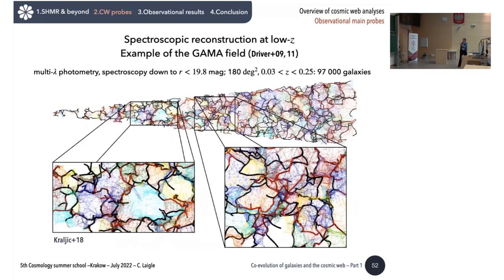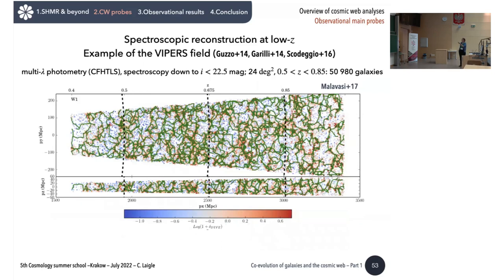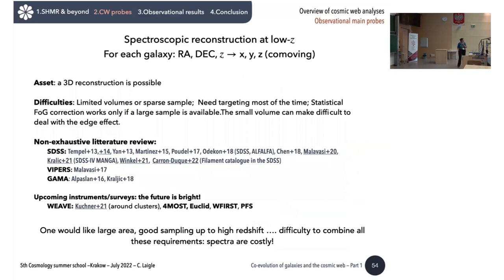Another example in the VIPERS field shows cosmic web reconstruction up to redshift 0.85, with filaments identified by the structure-finder code shown as green lines. A brief recap: with spectroscopic redshifts, we can make 3D reconstructions provided we correct for the finger-of-God effect, which is not easy especially with low statistics. But spectra are costly, so we are limited if we want to probe higher redshifts or lower masses.